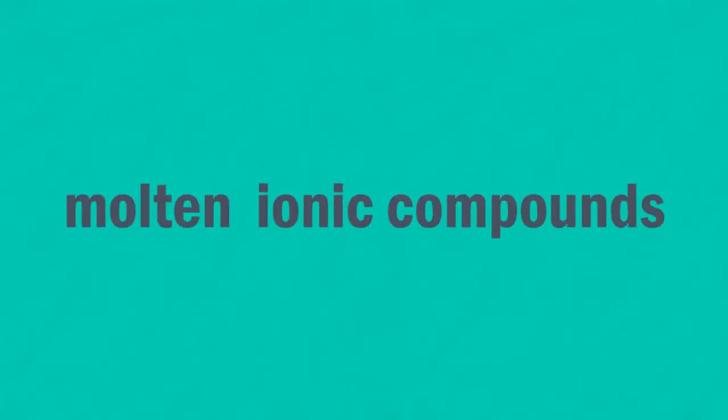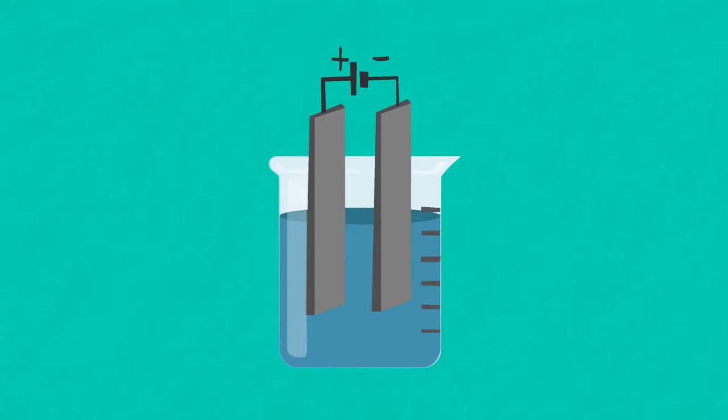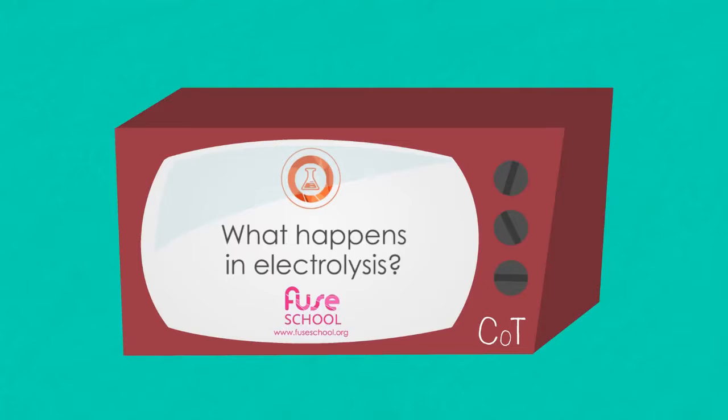This lesson looks at examples of molten ionic compounds and how they can be used in electrolysis. Before going any further, you'll need to know what electrolysis is and you may wish to refer to our lesson What Happens in Electrolysis.